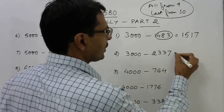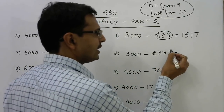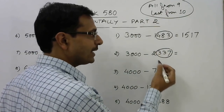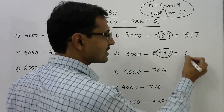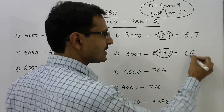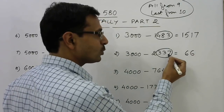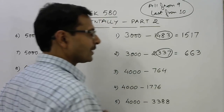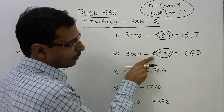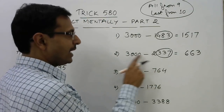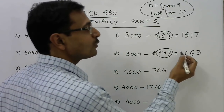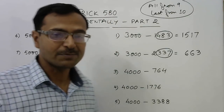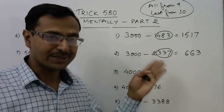Next, 3000 minus 2337. The last three digits are 337. Apply 'all from 9 and last from 10': 9 minus 3 is 6, 9 minus 3 is 6, and 10 minus 7 is 3. Now increase the leading digit 2 by 1 to get 3, and 3 minus 3 is 0, so we do not need to prefix anything. The answer is 663.